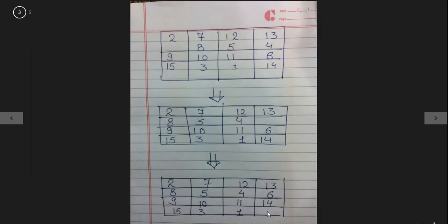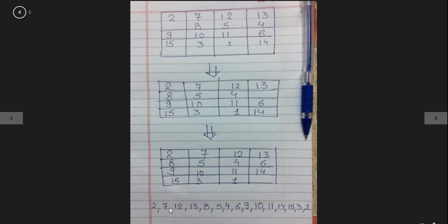Now the second step is to write down all the numbers in the given order as they are shown in the final table. As I have written over here.